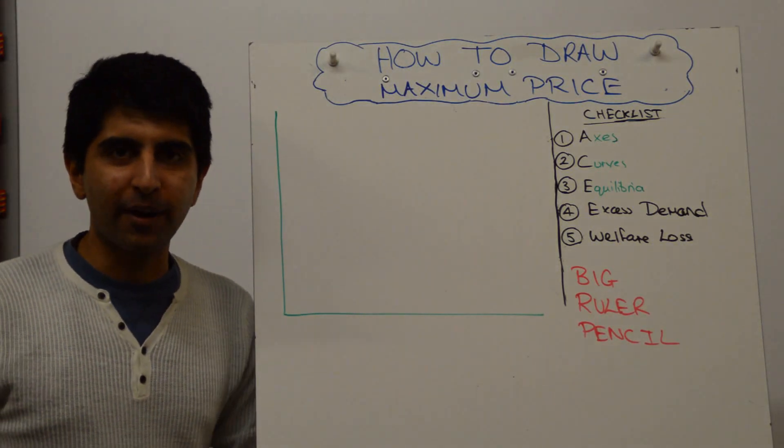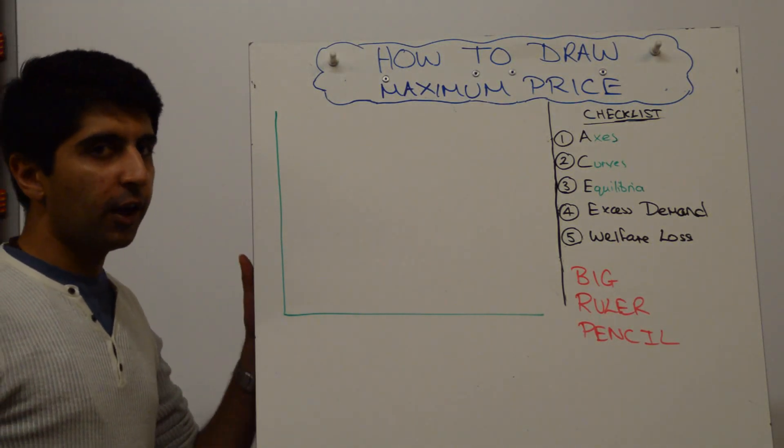Hi folks, you want to show a maximum price. How do you do it? Well, let's start with labeling the axis.